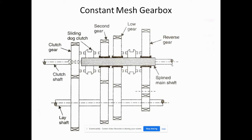Another important thing is dog clutch operation: the dog clutch facilitates the engagement and disengagement of gears. There is also a toothed collar on the gears that can slide to engage a specific gear, enabling smoother transmission between gears. The synchronization mechanism in the constant mesh gearbox synchronizes gear speed before engagement — before gears are engaged, it will synchronize their speeds.